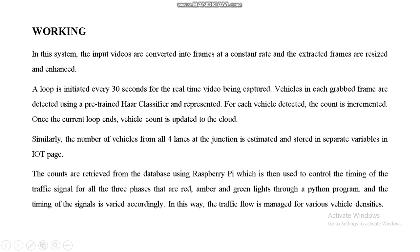The system is initiated every 30 seconds for real-time video capture. Vehicles in each frame are detected using a pre-trained Haar Cascade classifier. The number of vehicles from all four lanes at the junction is estimated and stored in separate variables on the IoT page. The counts are retrieved from the database using Raspberry Pi, which controls the timing of the traffic signal — red, amber, and green lights — through the Python program.